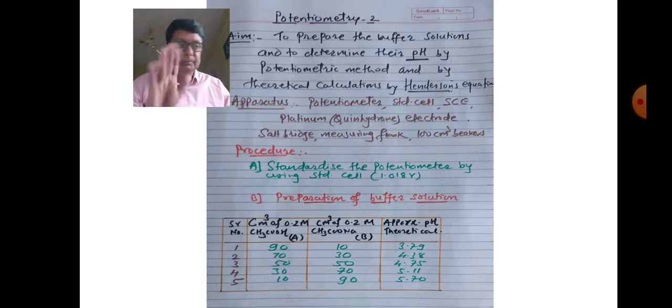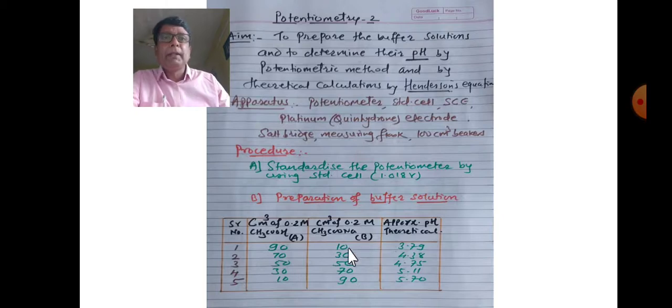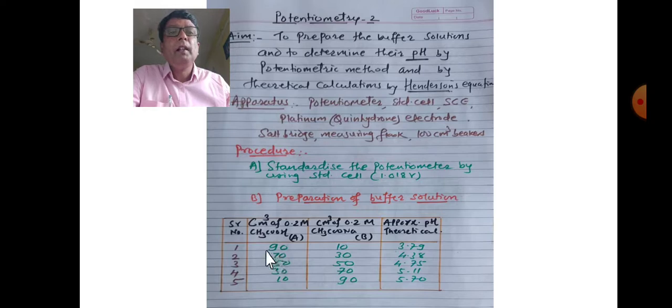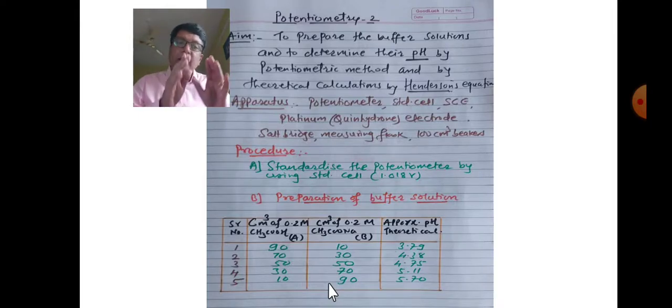Next, part B: preparation of buffer solutions. Buffer solutions: serial number one, two, three, four, five. Take cm³ of 0.2 molar acetic acid and cm³ of 0.2 molar sodium acetate with their approximate theoretical pH. The quantities are: 90 ml and 10 ml, which together make 100 ml. The ratios are 90:10, 70:30, 50:50, 30:70, and 10:90 for the five buffer solutions.